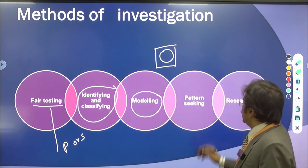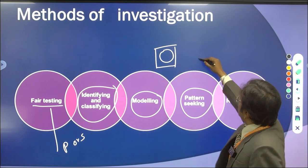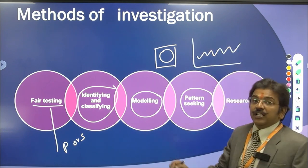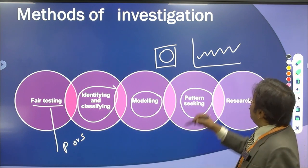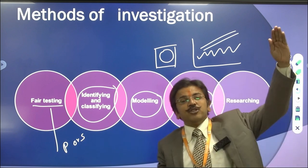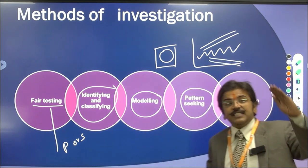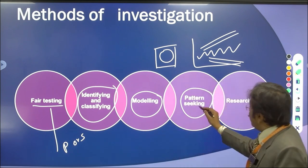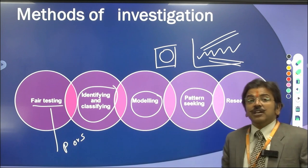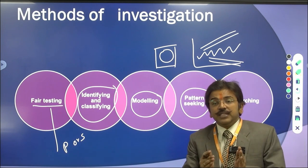The third method is pattern seeking. Pattern seeking means there is a certain pattern which works here. There is a graph or chart — you have to see the pattern. If the pattern is positive, you say it is a simple positive pattern; if the pattern is negative, you say it is a negative pattern. You must follow a pattern process for your investigation because it is very important to define your study.